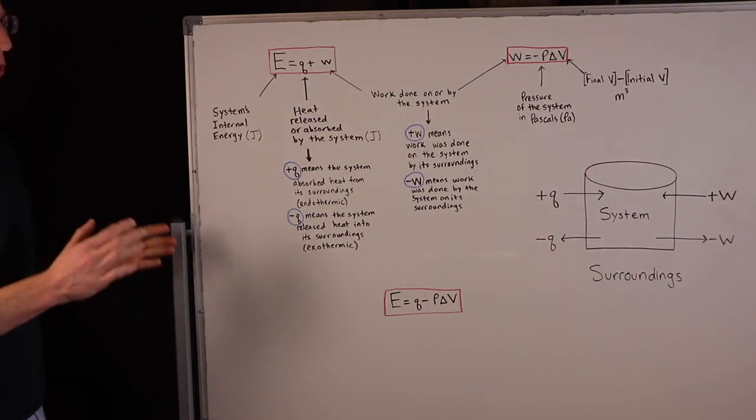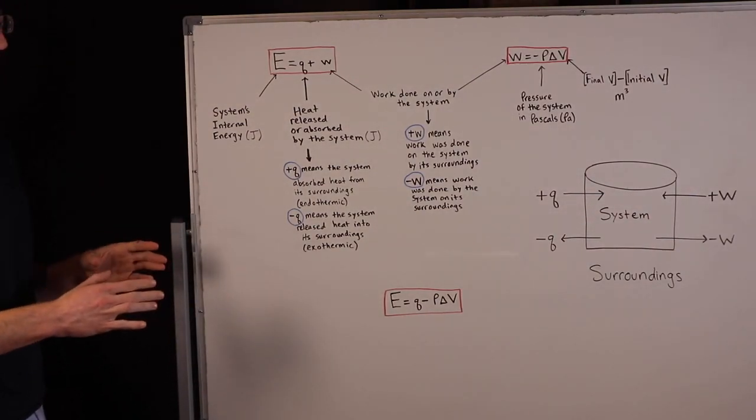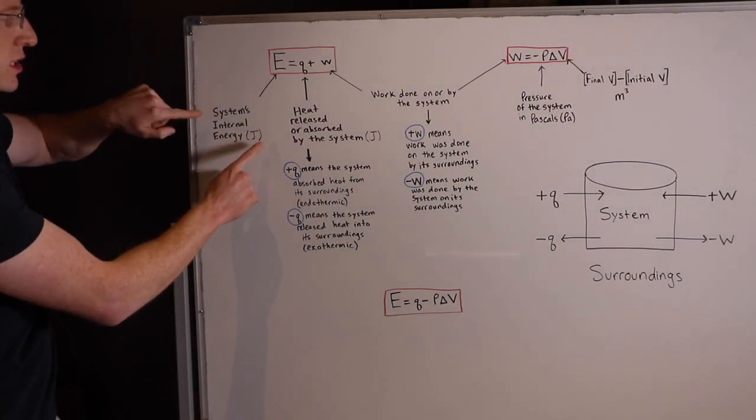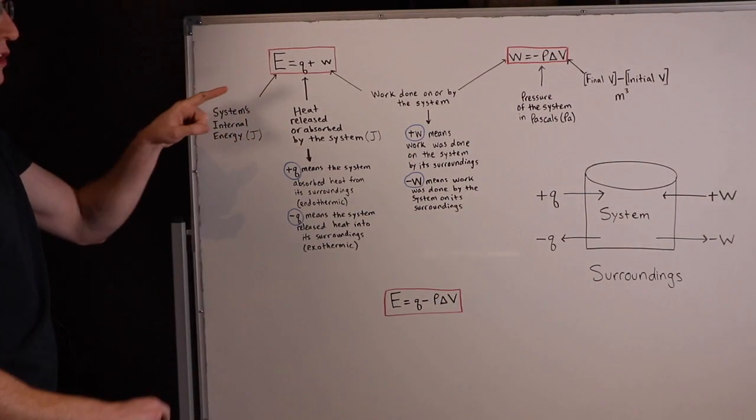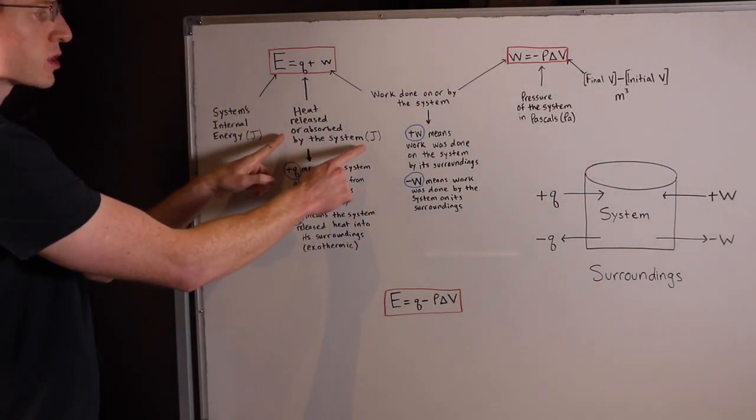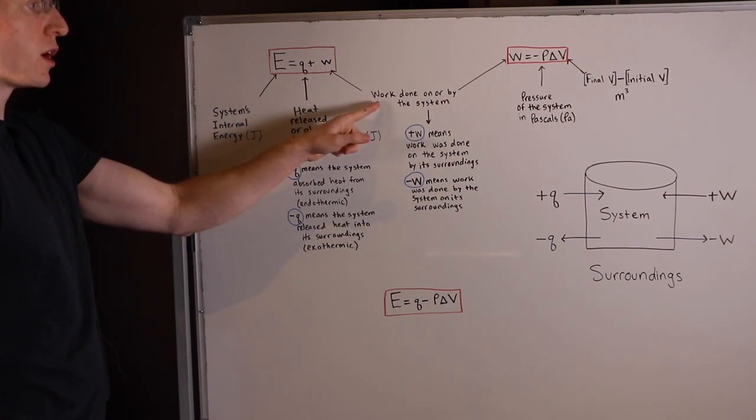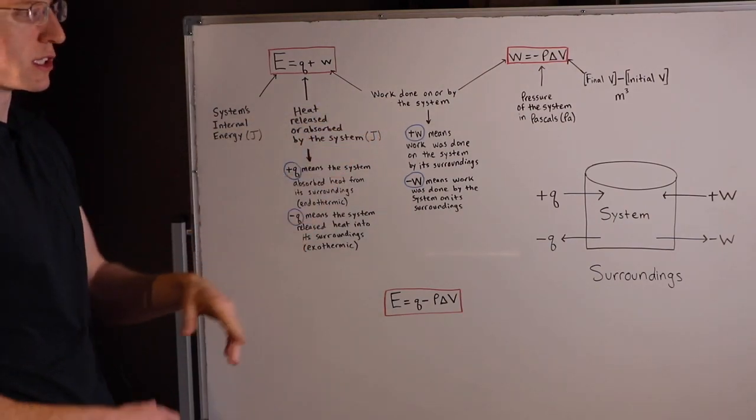In this video, we're going to talk about two equations very important to thermochemistry. The first one is right here, and it says E, the system's internal energy, is equal to Q, the heat released or absorbed by the system, plus W, the work done on or by the system.